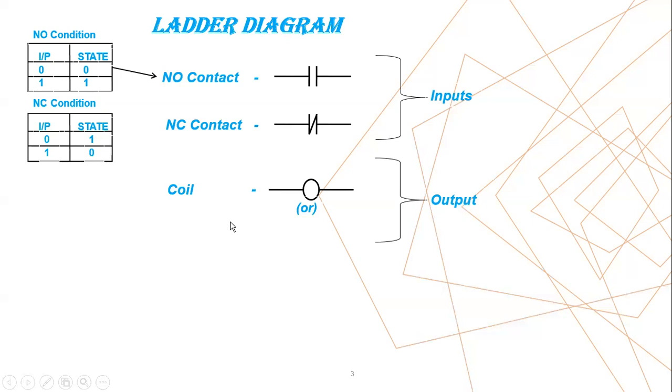And coil represents the output. So in your program, if you want to say motor, pump, valves, then you have to use this coil symbol to represent the outputs.